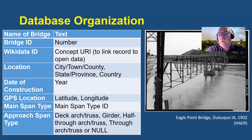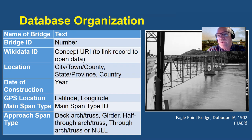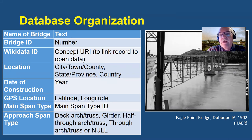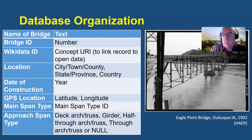This is the Eagle Point Bridge at Dubuque, Iowa, for example, constructed in 1902. The main spans are in the background towards the right of the photograph — they're steel through trusses, called through trusses because the roadway actually passes through the truss. The approach span, in the left foreground of the photograph, is a Pratt deck truss. It's called a deck truss because the truss is entirely beneath the roadway.